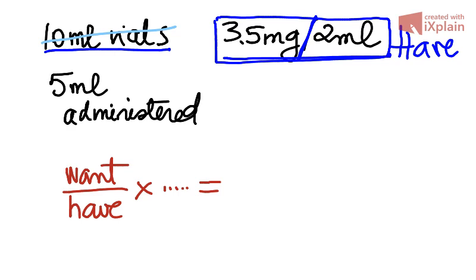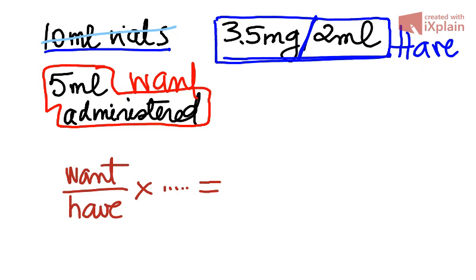The 5 ml is the other number we have, associated with the word 'administered'. That is what we are going to give. That's one of the words on the list for the want - to do with the patient, how much the patient needs.